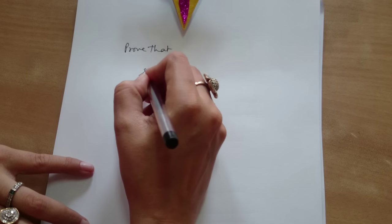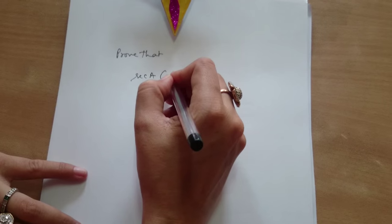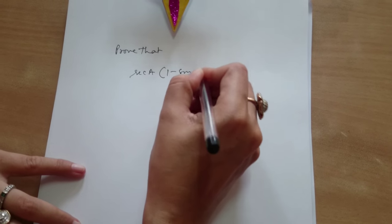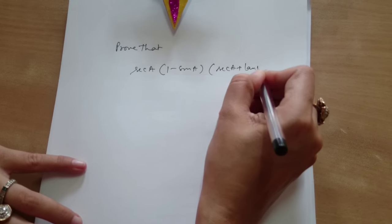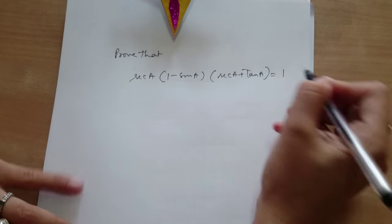Prove that secant a multiplied by 1 minus sin a multiplied by secant a plus tangent a equals to 1.